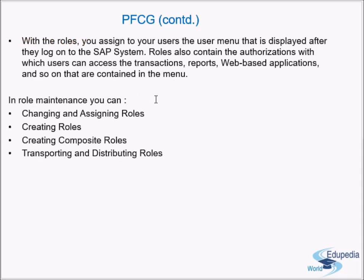With the roles assigned to your users, the user menu displayed after they log on to the SAP system is customized. When you log on, the initial screen you see is customized based on the role you are assigned. Roles also contain the authorizations with which users can access transactions, reports, web-based applications, and so on from the menu. From the initial screen you can also manually input transactions in the top left corner and navigate, or navigate through the customized user menu.